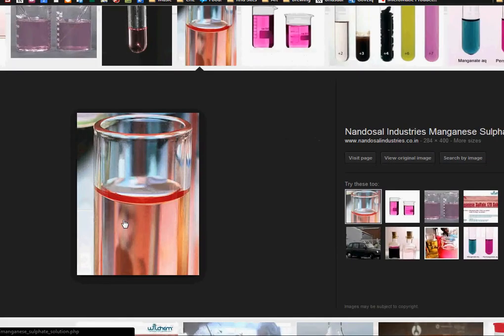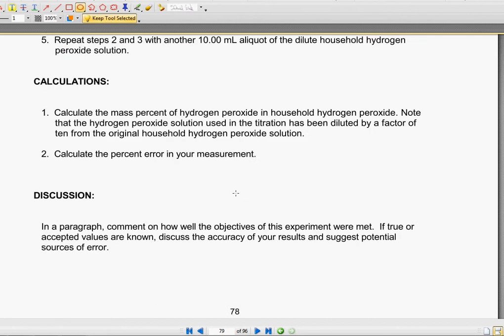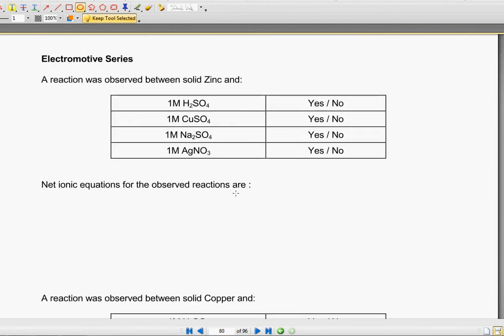And so I got a nice little picture for you guys. This is kind of what it looks like. And this is from Nando Sal Industries. It's an Indian company apparently. Anyway, this is manganese sulfate. And so that's the sort of pinkish color that you're going to get. And that is basically our lab.